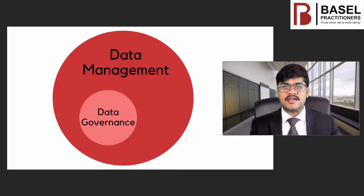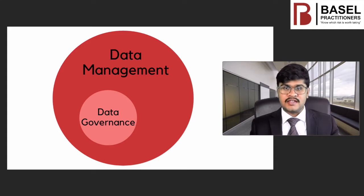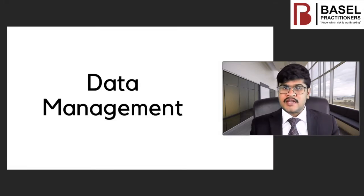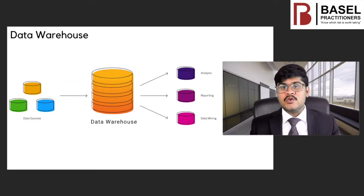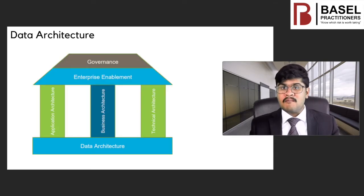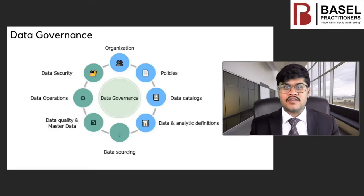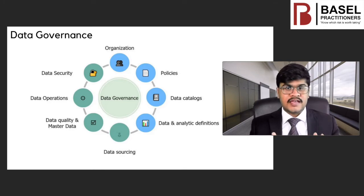It is key to understand that governance is part of the overall management of data. In other words, data governance enforces the policies and procedures to manage the data lifecycle, whereas data management executes these pieces of information which is then used for decision making. Some key elements of data management are data pipelines, data warehouse, data architecture, and data governance, which helps define policies and procedures to maintain data security and compliance.